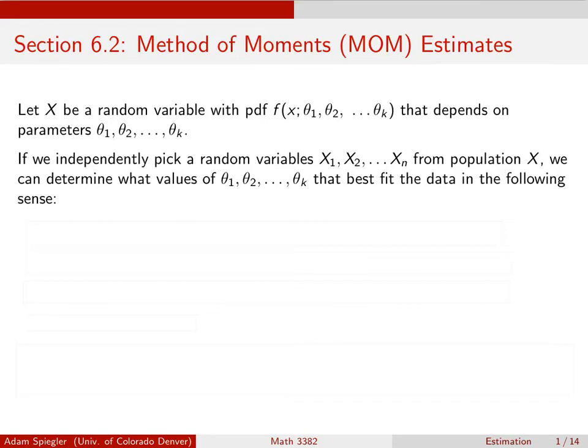We can start by saying I would like the mean of the population X to equal the mean of the sample. So we want to make sure that whatever parameters I come up with, they're gonna give me the same mean as I got from my sample.